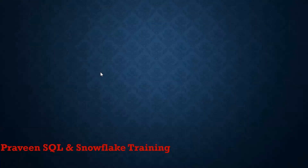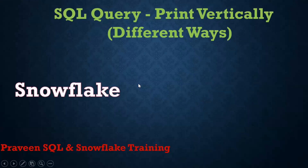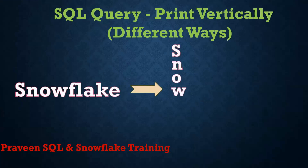Hello, welcome back to my channel, Ravind Kumar Bhumani. Today we'll see one of the SQL interview questions. I'm having a string like 'Snowflake' and I want to print it vertically. So this is my input and this is my expected output - S, N, O, W like this.